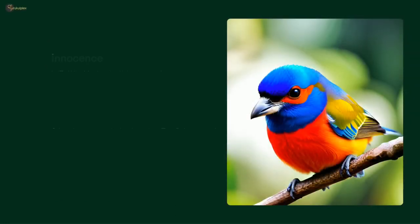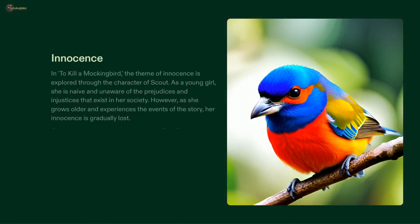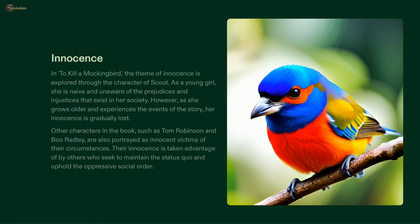Lee's classic novel To Kill a Mockingbird explores the theme of innocence through the character of Scout. Initially, her naivety shields her from the injustices she's surrounded by, yet she eventually grows to understand that her innocence can be used to the advantage of those who wish to uphold the oppressive status quo. This is also true of characters like Tom Robinson and Boo Radley, whose innocence is taken advantage of by those who wish to keep inequality in place. Ultimately, To Kill a Mockingbird serves as a potent reminder of the power of innocence and its implications.